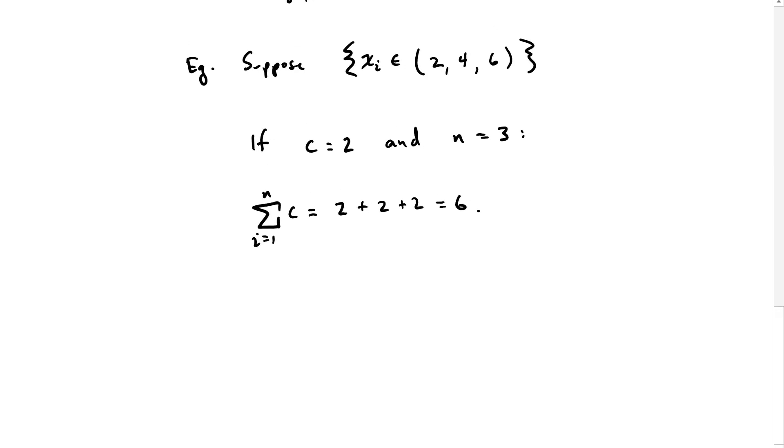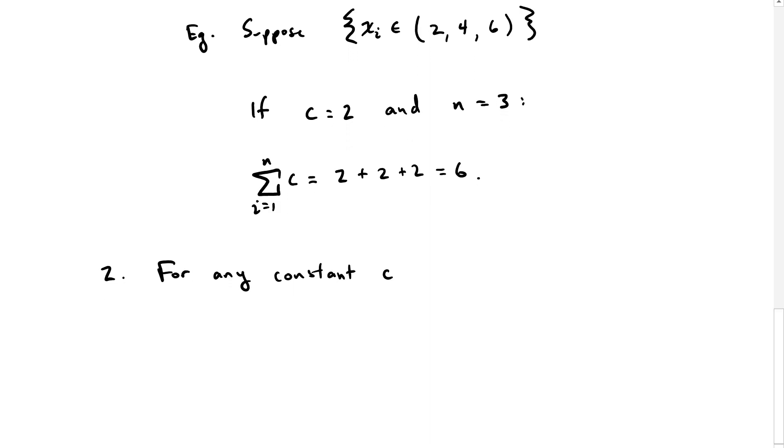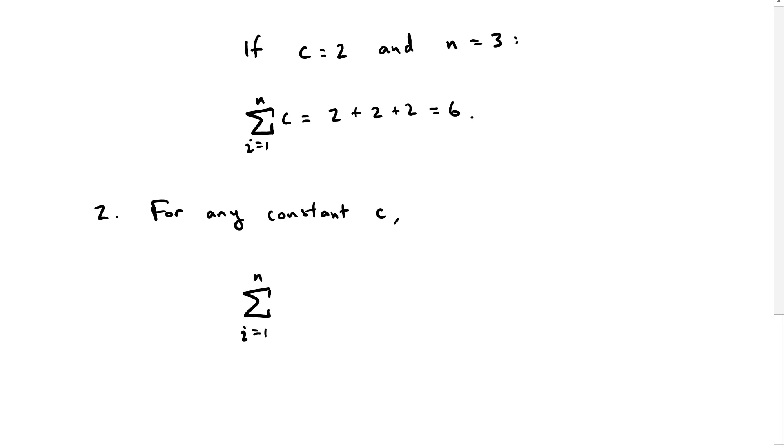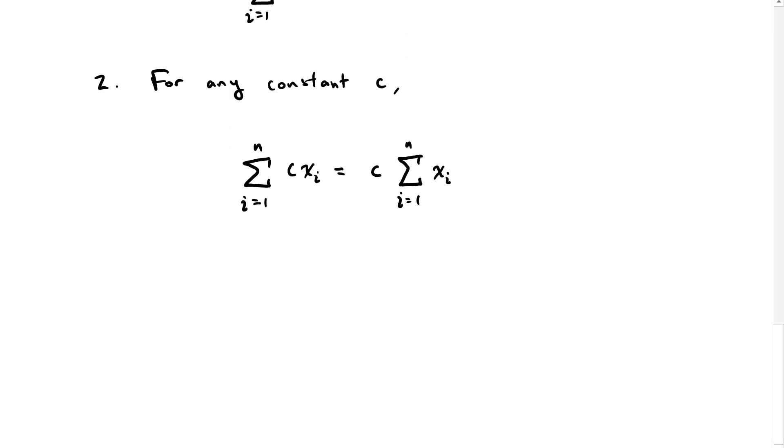Now let's add the xi numbers in there, and our second property. For any constant c, if we sum c times xi, we can actually factor out the c and just sum all the x's.